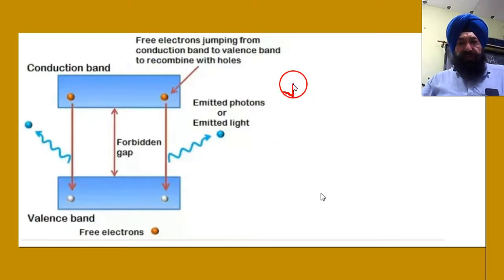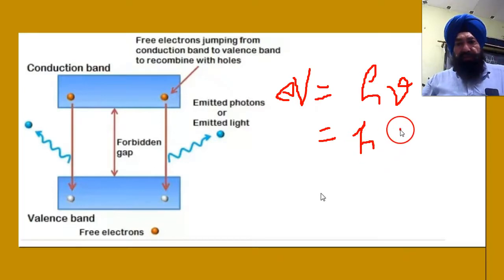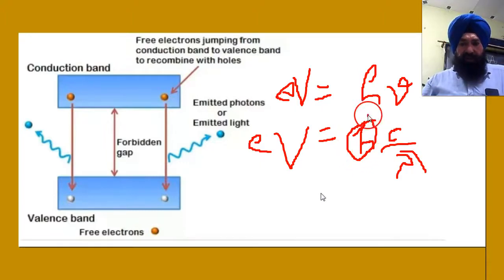I can write a formula. eV energy is used, or this made light. Light's energy is hν. So you can write hν equals C upon λ. This equals eV. From here you can find Planck's constant value.